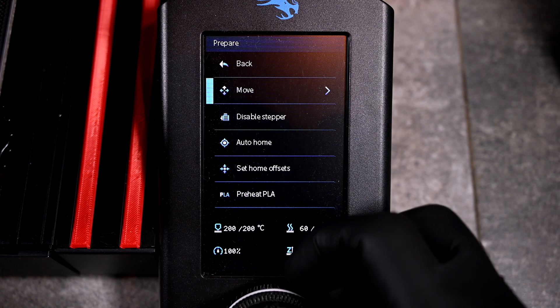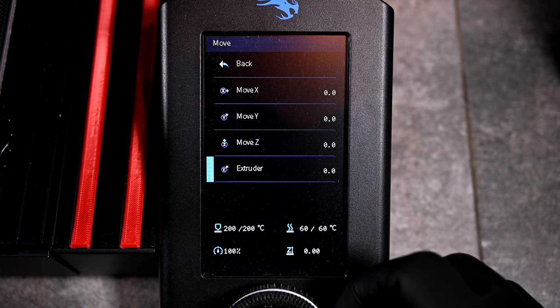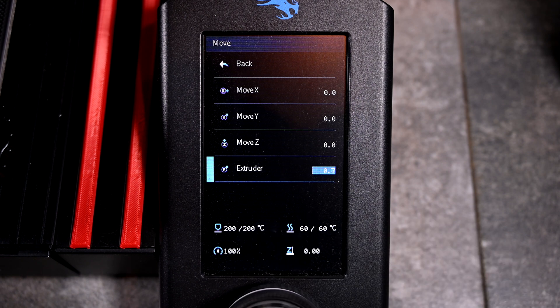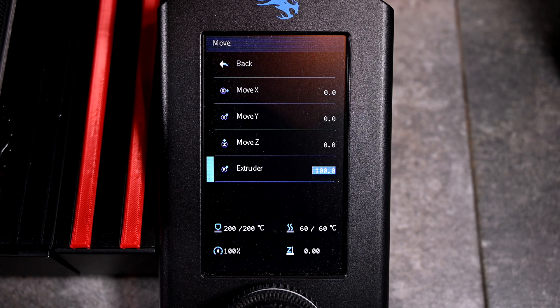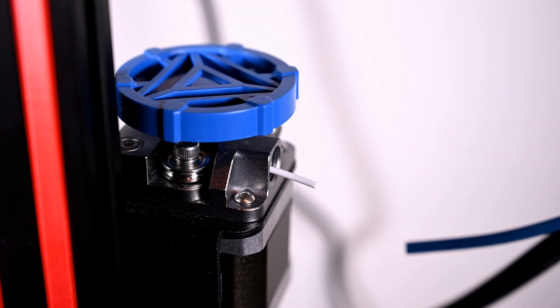Once the nozzle is over 180 degrees, we'll scroll back up to Move, then Extruder, and instruct it to push what it believes to be 100mm of filament through. It's also worth mentioning that Ricky Impey has a fantastic video on his channel where I learned how to do this myself. A lot of this section is in thanks to him.